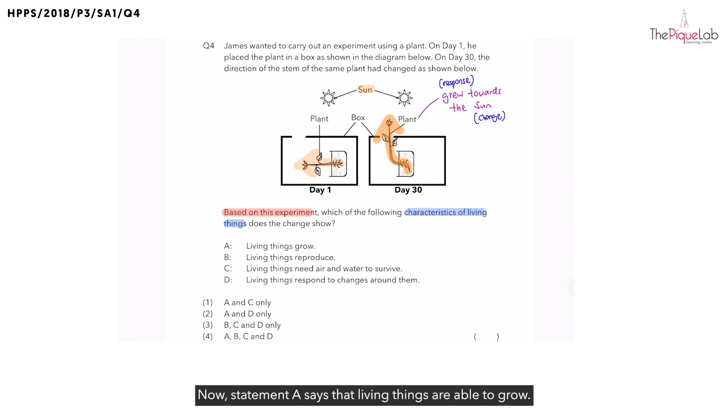Now, statement A says that living things are able to grow. Is that shown in this experiment? Yes. In fact, we said that the plant grew towards the sun. So A is definitely correct. Next, what about B?